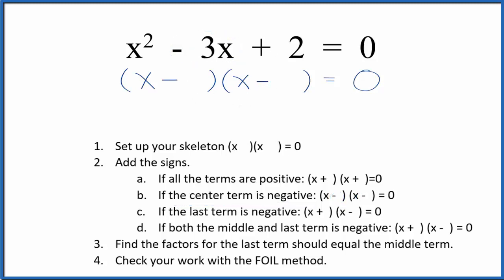So once we have these signs, we can find the factors for the last term. That's the 2, and they should equal the middle term. So for 2, we could have 1 times 2, and that's it. Those are the factors. So it really doesn't matter if we put a 1 and a 2 here. That should work. Negative 2 and negative 1, add those together, you get negative 3.